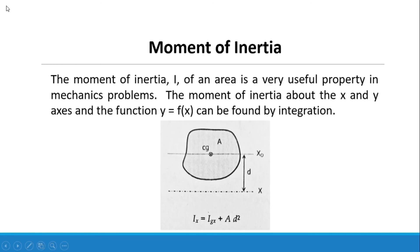Next, moment of inertia. The moment of inertia, designated as I, of an area is a very useful property in mechanics problems. The moment of inertia about the x and y-axis can be found by integration. The formula is: Ix equals I sub gx plus A times d squared, where d is the distance from the x-axis to the centroid of the plane area. This is the parallel axis theorem.